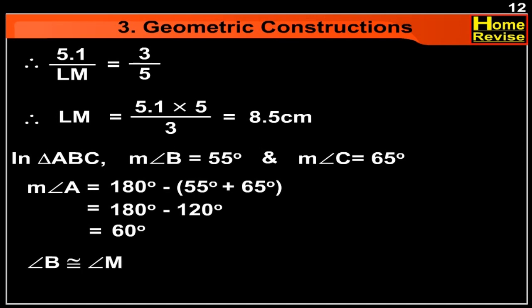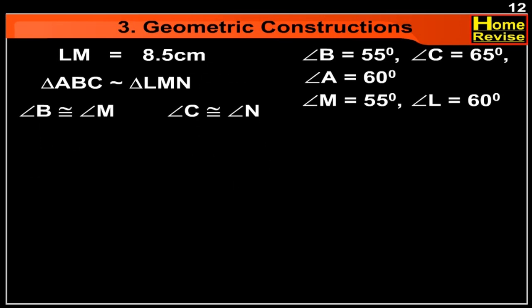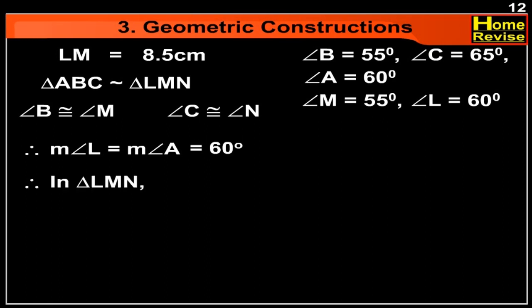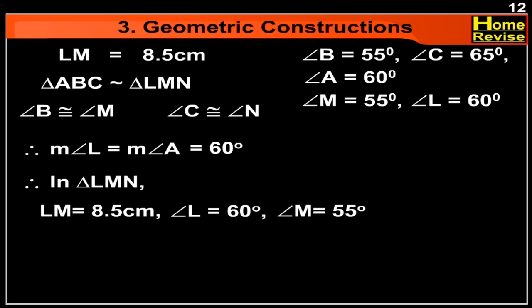Also, angle B is congruent with angle M and angle C is congruent with angle N. Therefore, measure angle L is equal to measure angle A, which equals 60 degrees. Therefore, in triangle LMN, LM is equal to 8.5 cm, angle L is equal to 60 degrees, angle M is equal to 55 degrees, and angle N is equal to 65 degrees. With the help of the given measures, let us draw triangle ABC and triangle LMN.